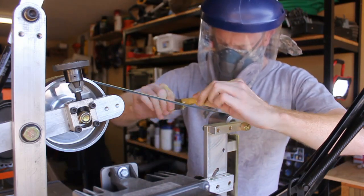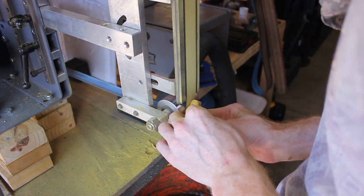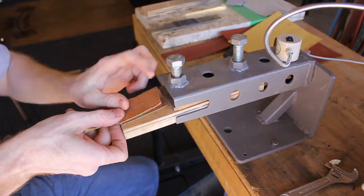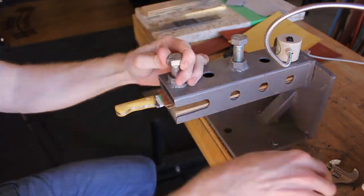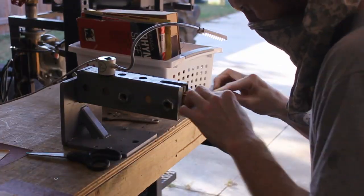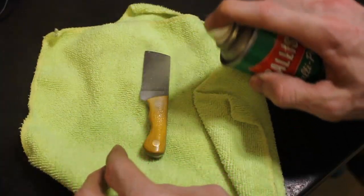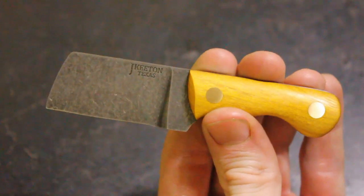We use a scalloped one-inch belt with J-Flex backing. Those belts are super handy. I used to start with a 120 scalloped belt, but now I'm starting with 220 because the 120 scratches can be kind of hard to get out. Then we transition to hand sanding, starting with around 300 grit and getting this one up to about 600 grit finish on the handle.